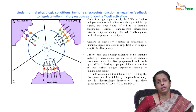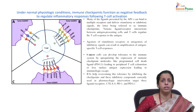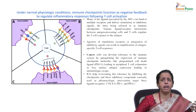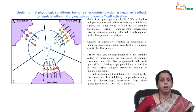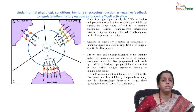The second signal involves co-stimulatory ligands on APCs that interact with corresponding receptors on the T cell surface. Without co-stimulatory interactions, the T cell will either die or become anergic. This leads to the question: how do cancer cells become tolerant to the immune system?